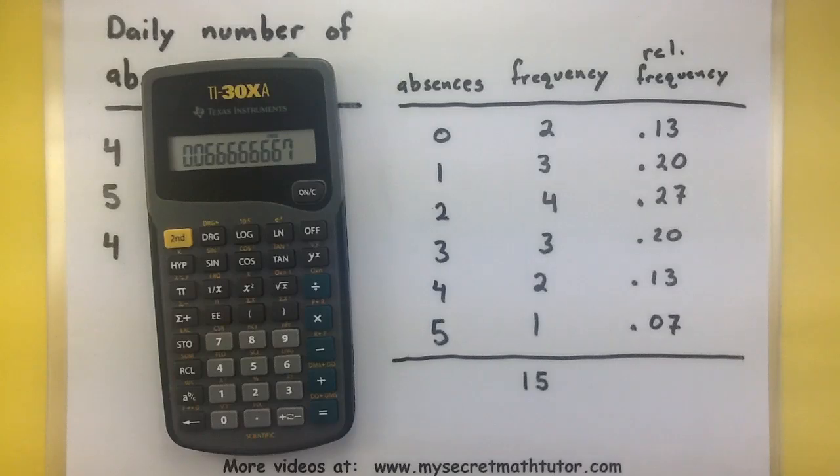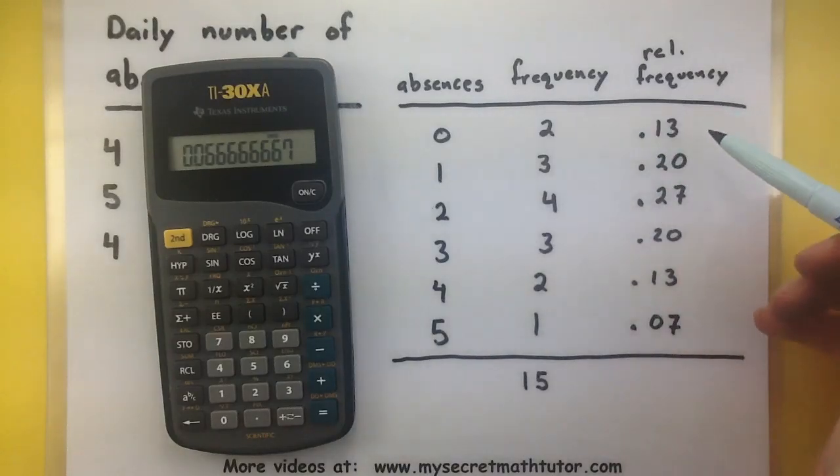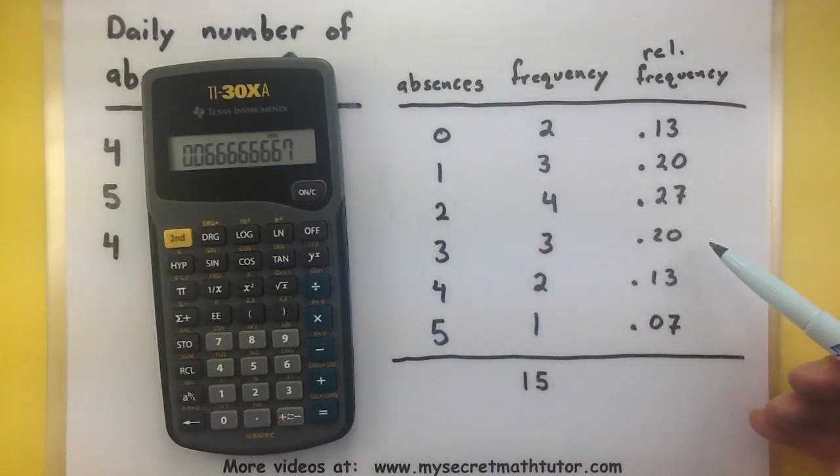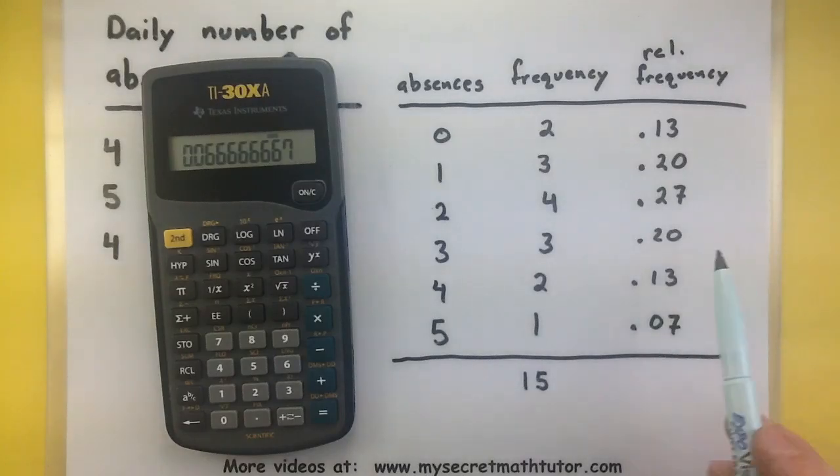All right, so you can see that in the relative frequency, what I was saying when I said this is like a percentage. Because if I wanted to know, well, how often can I expect to see, say, three absences in my list, it'll show up there about 20% of the time.